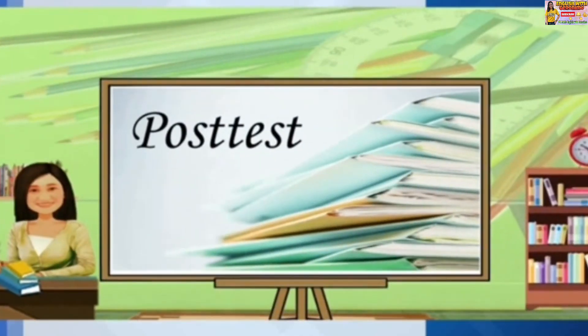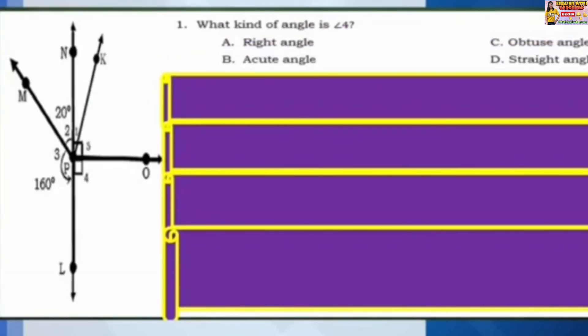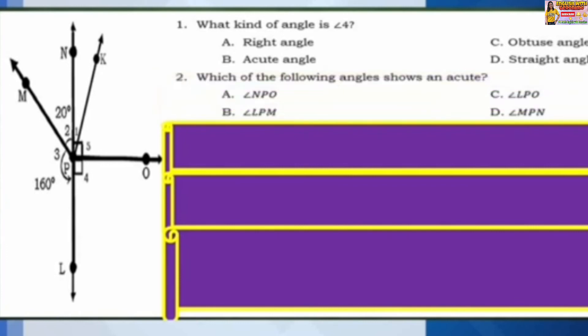Let's have a post-test. Number 1: What kind of angle is angle 4? A: Right angle. B: Acute angle. C: Obtuse angle. D: Straight angle.